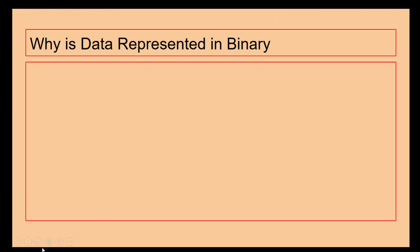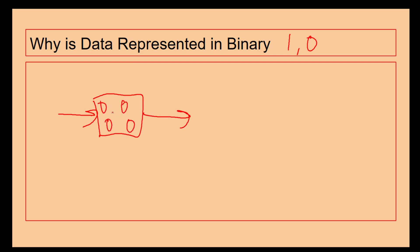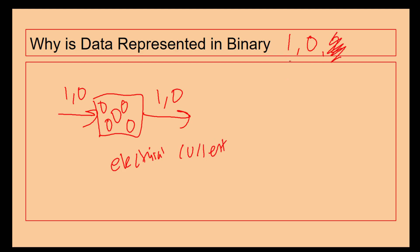You need to remember that data is represented in binary in a computer system because the two possible values can be one or zero. We have got the CPU sat inside a computer with different things going on inside the registers and inside the program counters. All it accepts is a one or a zero, and all it will give out is a one or a zero because it represents the electrical current. You can't have an electrical current of two because it's either on or it is off.